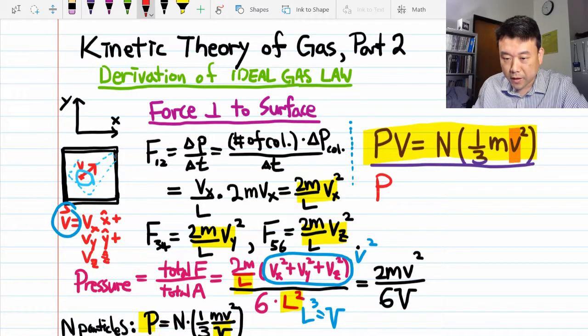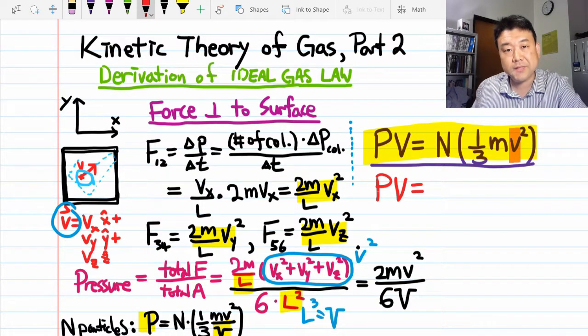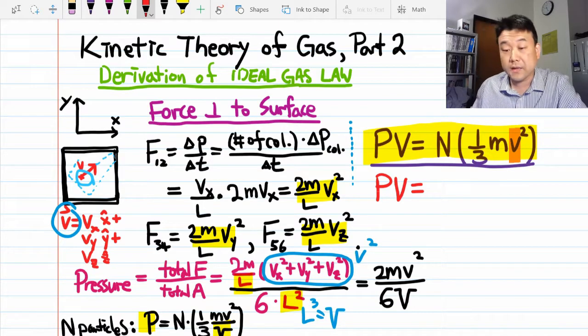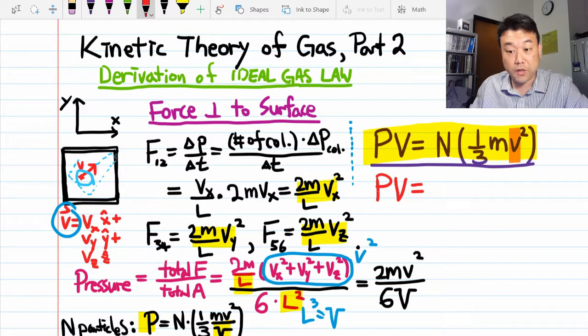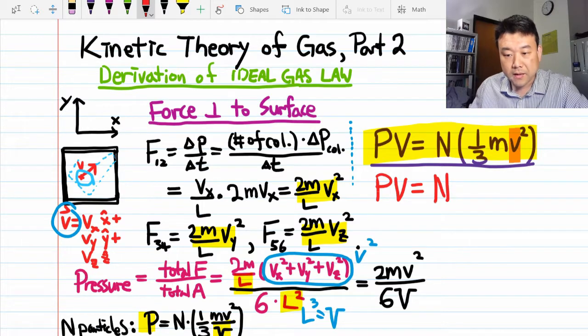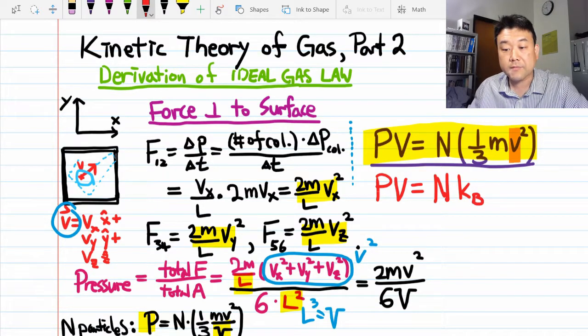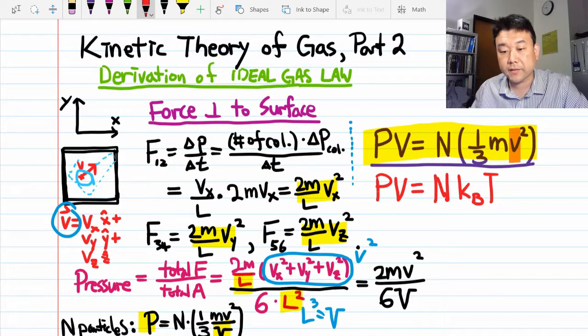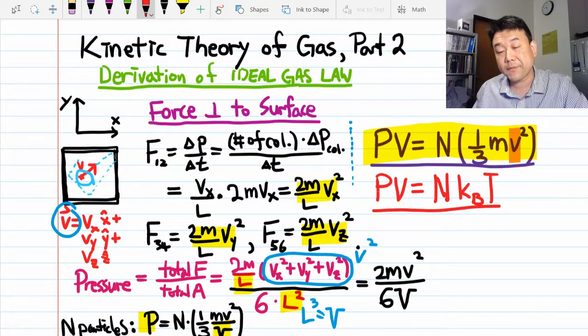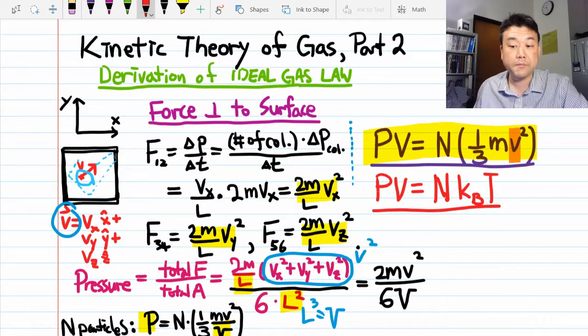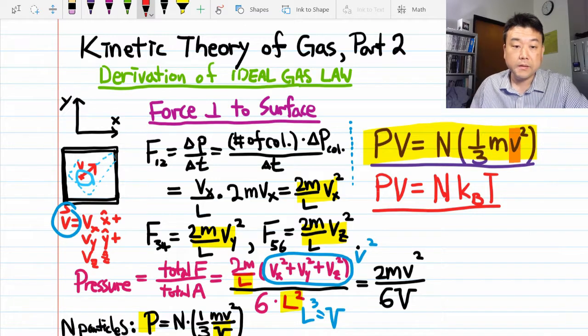Pressure times volume is equal to, in chemistry, you learned lowercase n times gas constant R. In physics, it would be the number of gas molecules, capital N, times what we call Boltzmann constant k, sometimes with subscript b, sometimes without, times the temperature. So this is the experimentally determined ideal gas law that relates the macroscopic dynamical quantities: pressure, volume, and temperature.